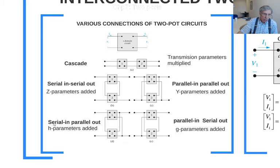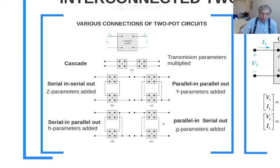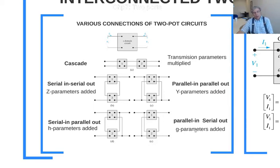If the input ports are connected in series but the output ports are connected in parallel, then the G parameters of those two two-port circuits give you the resulting two-port circuit G parameters.